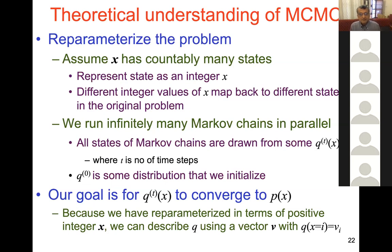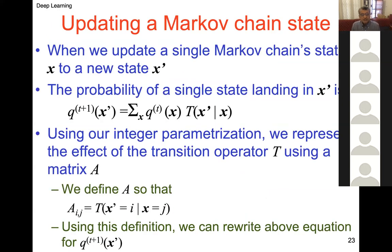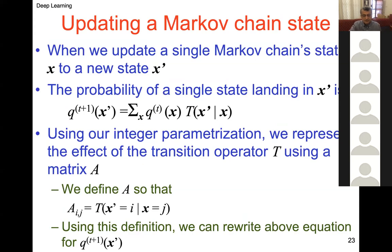Re-parameterize the problem: assume X has countably many states. We talk about running infinitely many Markov chains in parallel. Suppose we have different starting states and keep producing chains, generating a distribution q at time t. This distribution should converge to p(x). The conditional distribution is going along with p(x). Updating the Markov chain state: the probability of a single state landing in x' is given by q(t+1) in terms of q(t) and transition probabilities.